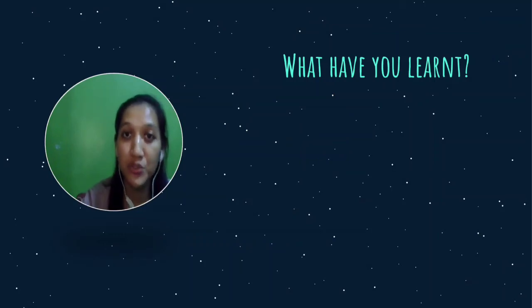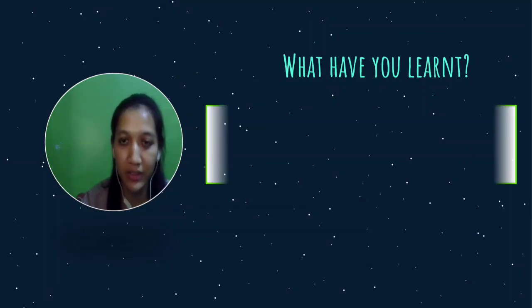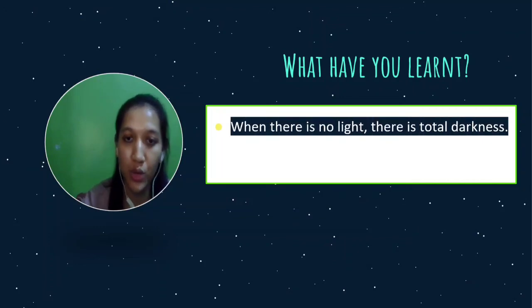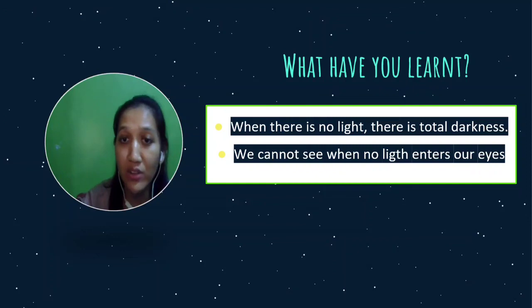For sure? Try this activity. Is this one? Wow, great. So let's sum up our discussion today. What have you learned from this topic? Yes, the first one. When there is no light, there is total darkness. And we cannot see when no light enters our eyes.